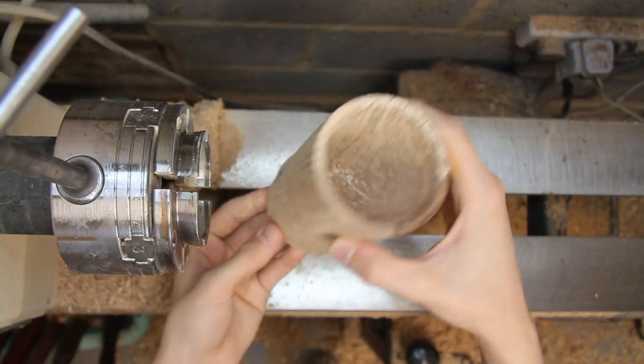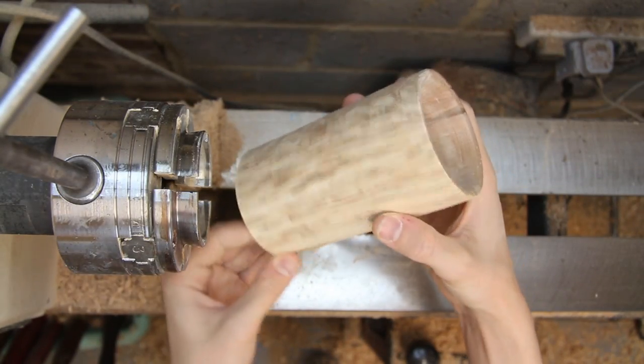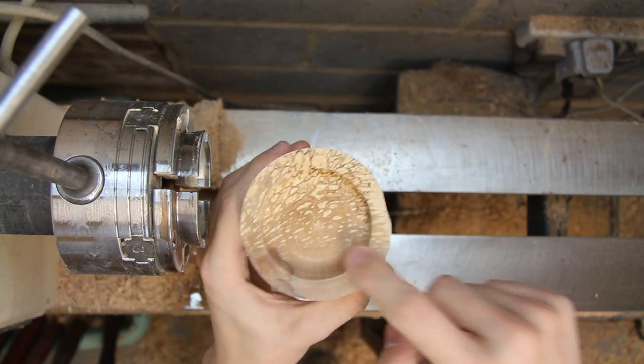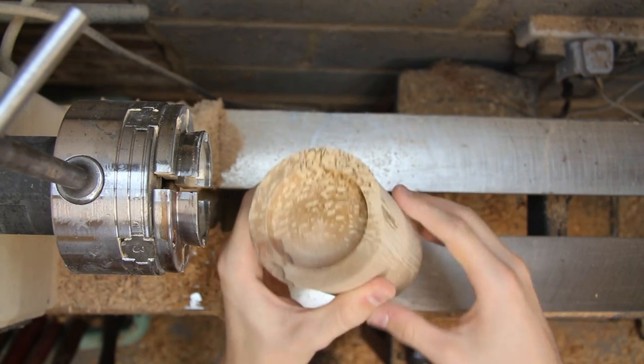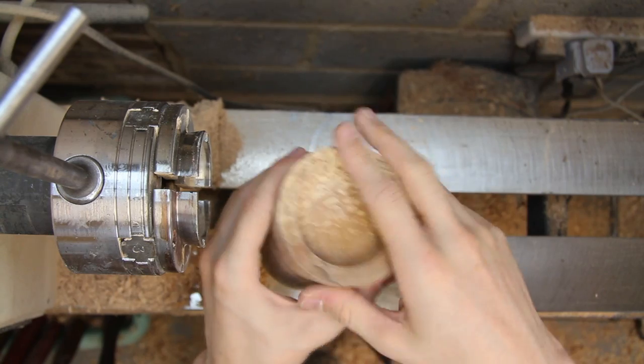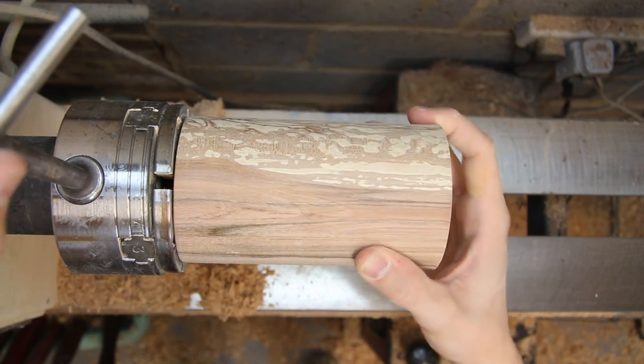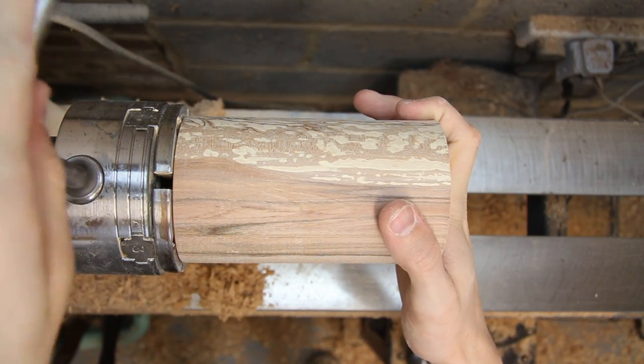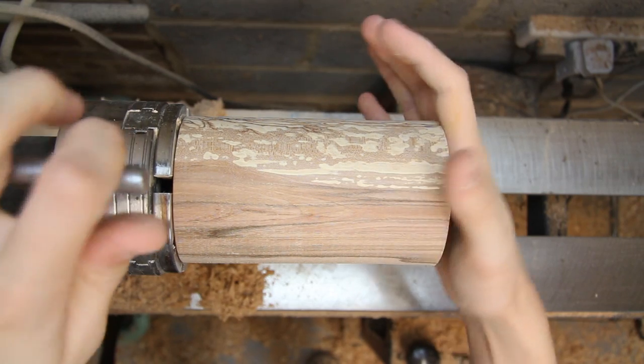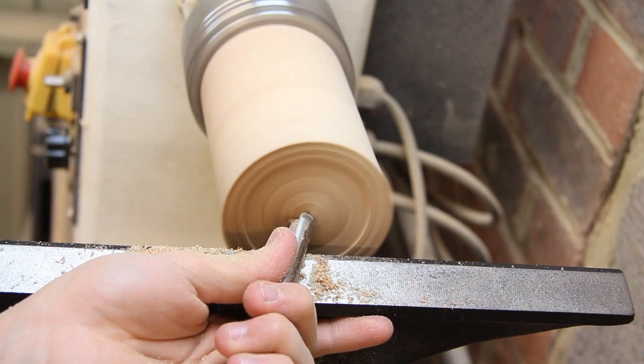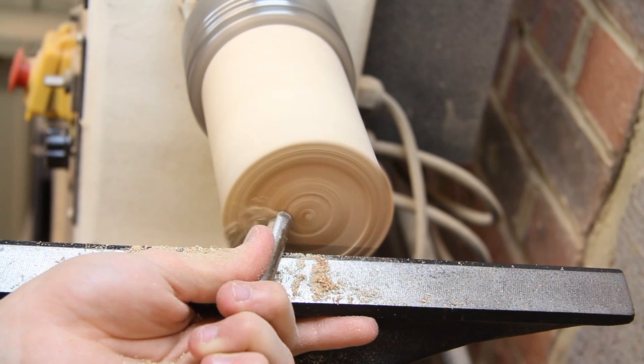Right so there we go, the cup's almost finished now but because I don't want this deep recess left on the bottom I'm actually going to flatten that off. And to do that I'm just going to flip it round once more and if I gently hold it on the lathe I should be able to take some light passes and flatten up the bottom.